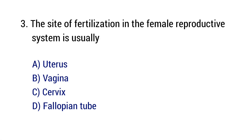Question number 3. The site of fertilization in the female reproductive system is usually? The right answer is option D: Fallopian tube.